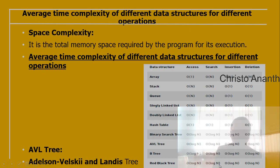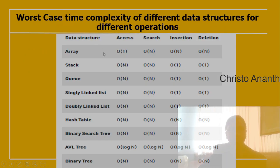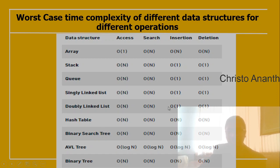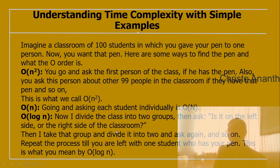AVL stands for Adelson-Velsky and Landis tree. For worst case complexity: array access O(1), search, insertion, deletion O(n). Stack and queue similar. Hash table is O(n) for all operations in worst case. Binary search tree O(n). AVL tree O(log n) for all cases. You should know best case, average case, and worst case complexities.